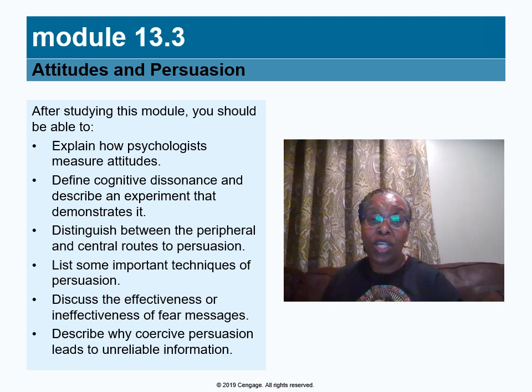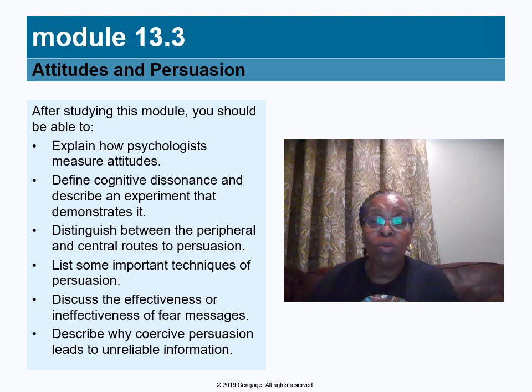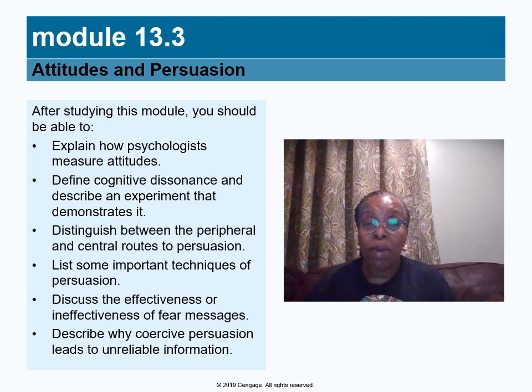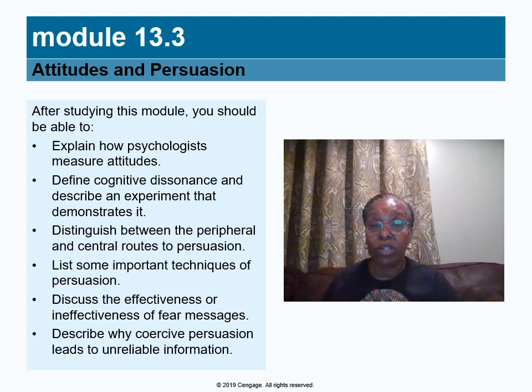Now we're going to speak about attitudes and persuasion, Module 13.3. Once finished with this module, we should be able to explain how attitudes are measured, look at cognitive dissonance experiments, discuss peripheral and central routes to persuasion as well as different persuasion techniques, look at the effectiveness of fear messages, and explain coercive persuasion and how it distorts information.